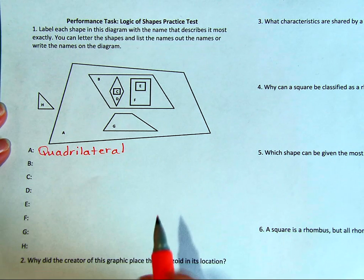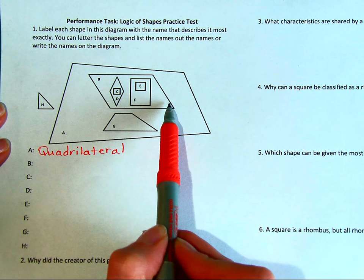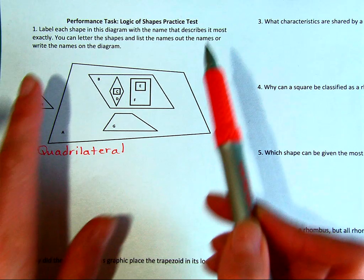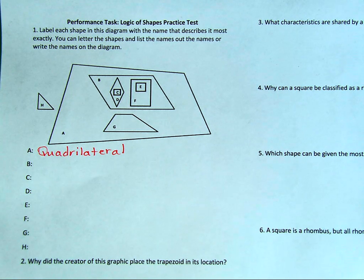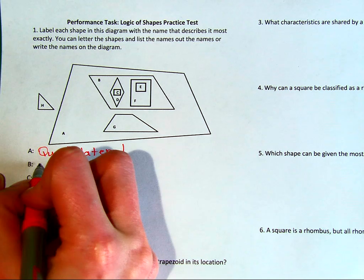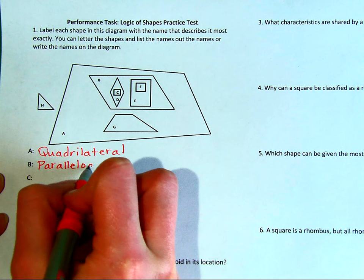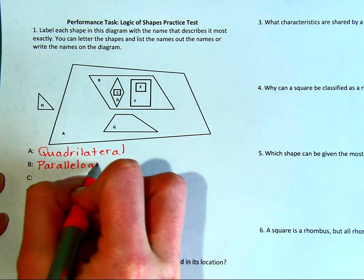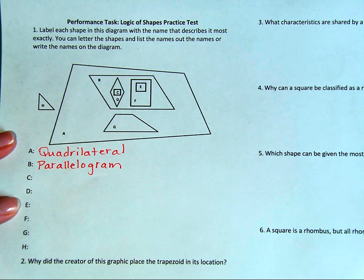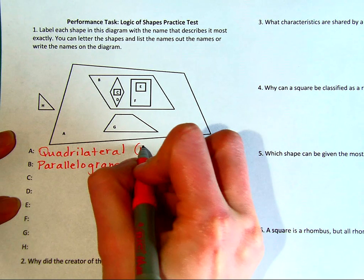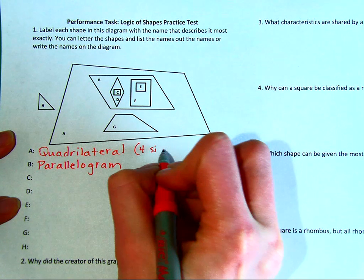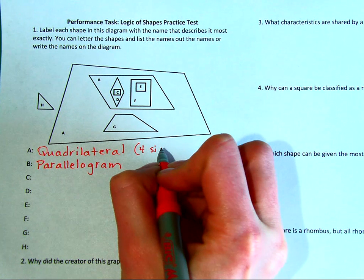Shape B does have two sets of parallel lines. Those lines are not equal in length, so we will call this a parallelogram because it has two sets of parallel lines. You can even write that in parenthesis while you're writing — that might help your brain sort of organize the information.